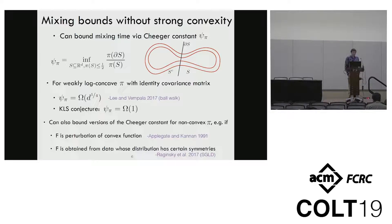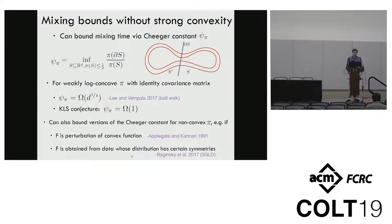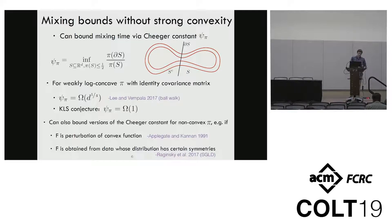How can one bound the mixing time of a Markov chain in a non-convex setting? One way is to consider a quantity called the Cheeger constant of the log density. Roughly, the Cheeger constant describes the extent to which the level sets of the log density have bottlenecks. One can bound the Cheeger constant when the log density is weakly convex, and one can also bound this Cheeger constant in many non-convex applications as well.